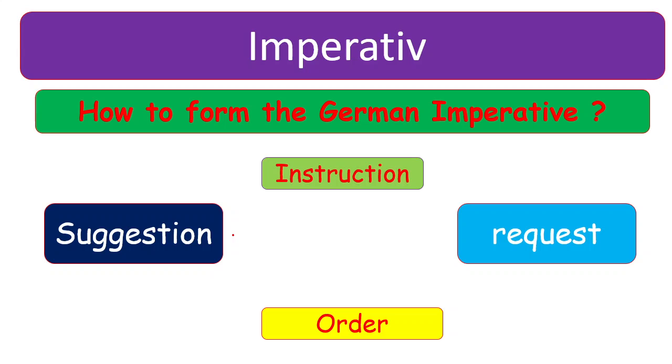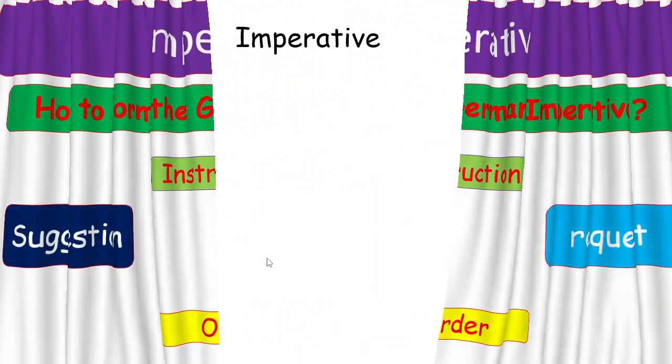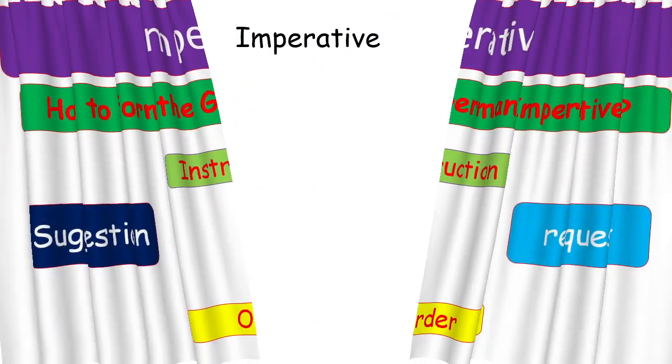Imperative is used in German language for instruction, request, order or suggestion. Let's see what is Imperative and how to make a sentence with Imperative.